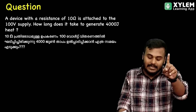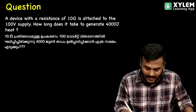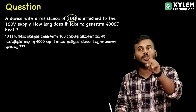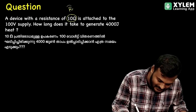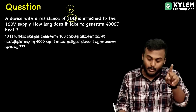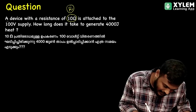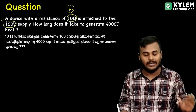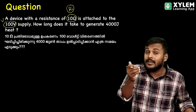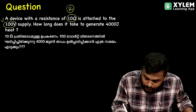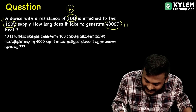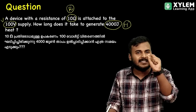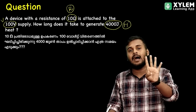If you have a device with a resistance of 10 ohms, and attach it to a 100 voltage. So the applied voltage is 100V. How long it takes to generate 4000 J of heat? It is 4000 J.